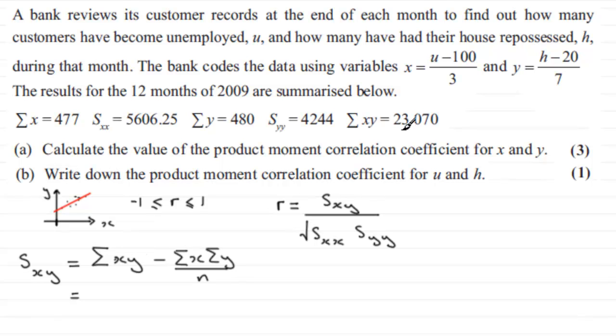We just need to fill in these values. So Sigma xy we're given as being 23,070, minus Sigma x that's 477, and that's multiplied by Sigma y which is 480. We divide this result by n, the number of observations. Well it says here the results for the 12 months of 2009 are summarized below, so n must be 12, so we divide by 12.